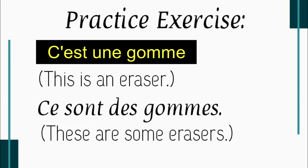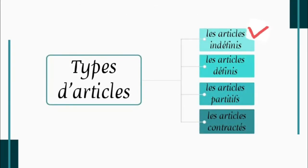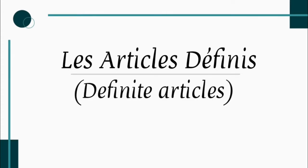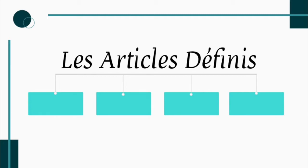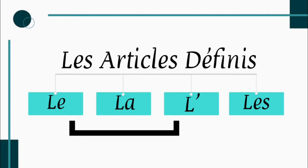Now let's move on to the next category: les articles définis — that means definite articles. Definite articles in English can be translated as 'the.' But in French, the forms of definite articles are: le, la, l'apostrophe, les. Le, la, and l'apostrophe are used with singular nouns. Les is used with plural nouns.